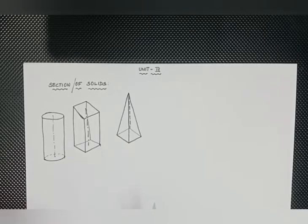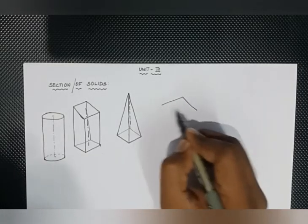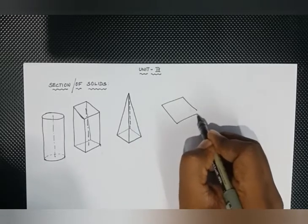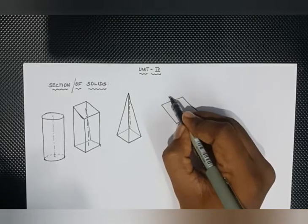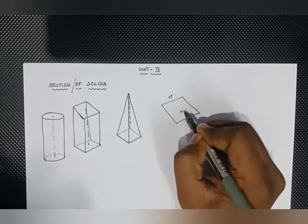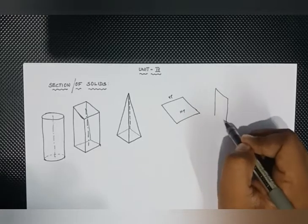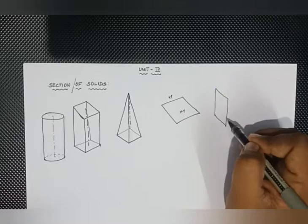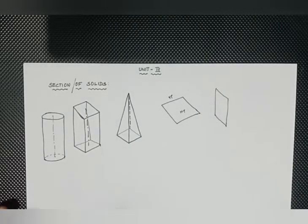So let's discuss the cutting plane. A cutting plane is a two-dimensional object. So the cutting plane is VP perpendicular and HP parallel — meaning it is perpendicular to the vertical plane and parallel to the horizontal plane.